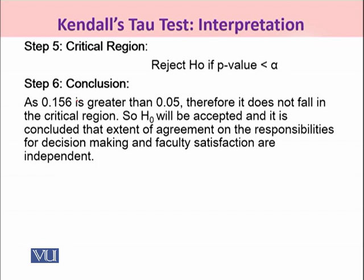So, we would reject H0 if our p-value is less than alpha, and our alpha was 0.01. After dividing the p-value by 2, I have obtained the one-tailed p-value. Why divide by 2? Because the p-value observed in the output was for a two-tailed test, but under H1 we required the one-tailed p-value. So, dividing by 2 gives us a one-tailed p-value of 0.156. As you can see, 0.156 is much greater than our alpha of 0.05, so it does not fall in our critical region.